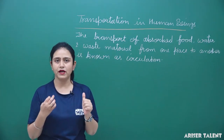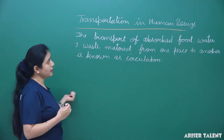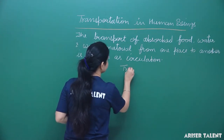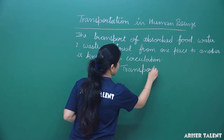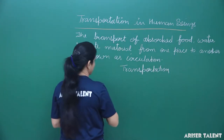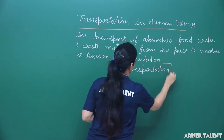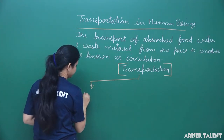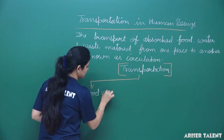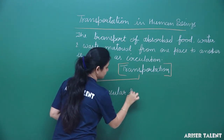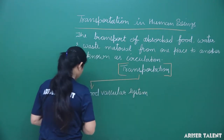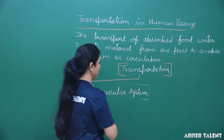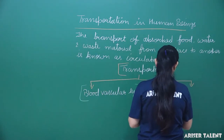This circulation is generally done by blood. Transportation in human beings is divided into two parts: one is the blood vascular system and the other is the lymphatic system.